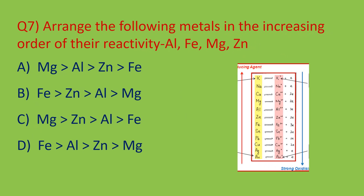Question number seven: arrange the following metals in increasing order of their reactivity — aluminum, iron, magnesium, and zinc. To answer this, write the reactivity series in descending order. By observing the reactivity series, the increasing order is: iron, zinc, aluminum, magnesium. Iron is the least reactive, zinc is more reactive than iron, aluminum more reactive than zinc, and magnesium more reactive than aluminum. So option B is the right answer.